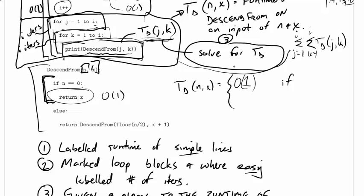So it takes order 1 time if n equals 0, and otherwise if n is larger than 0, well this happens. Let's see, we take the floor of n over 2, again we'll assume that takes constant time. We're giving ourselves a very powerful computer here. We're going to do x plus 1, that's going to take constant time, and that's kind of it. We're going to return whatever value we get, so we'll say that takes constant time too.